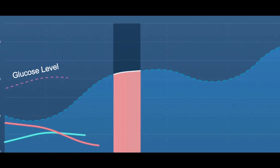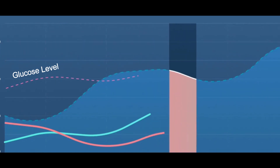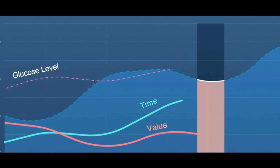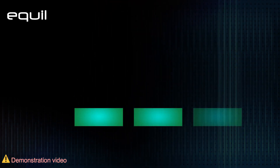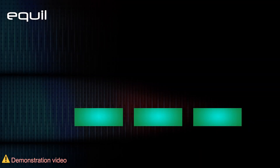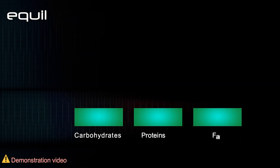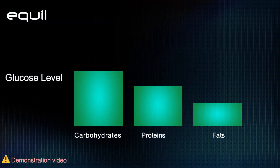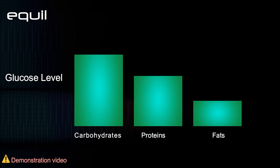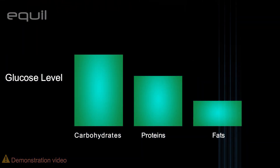However, high levels of glucose in the blood vary from one food to another in terms of their value and continuity in the blood. Given that meals consist of three different types of food — namely carbohydrates, proteins, and fats — the effect of each on glucose levels will differ due to differences in the digestion mechanism and the time required to complete it.